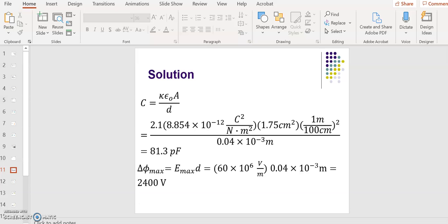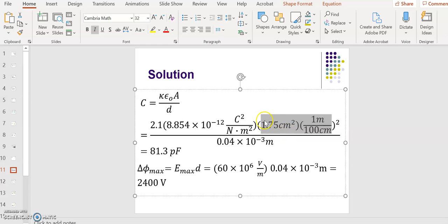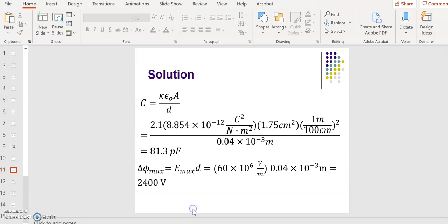Remember that our parallel plate capacitor has the equation epsilon naught A over d. And then to find the capacitance with the dielectric, you just multiply that times the dielectric constant kappa. So plugging in for all of those things for this problem, we have kappa is 2.1, epsilon naught is 8.854 times 10 to the minus 12 in SI units, the area of the plates was 1.75 square centimeters, and the distance in between the plates was 0.04 millimeters. Plugging that all in and doing unit conversion when necessary, you've got 1.75 square centimeters, and I had to convert that to meters to be consistent across. So 1 meter, 100 centimeters, and you square that unit. And when you do all that, you end up with a capacitance of 81.3 picofarads.